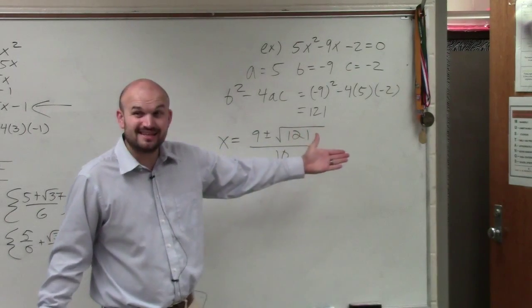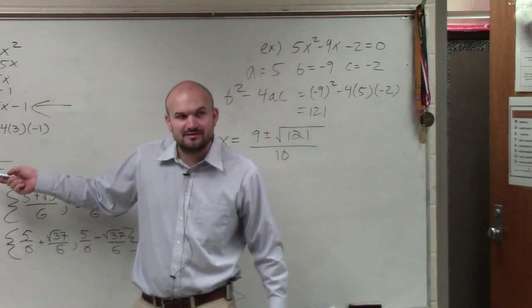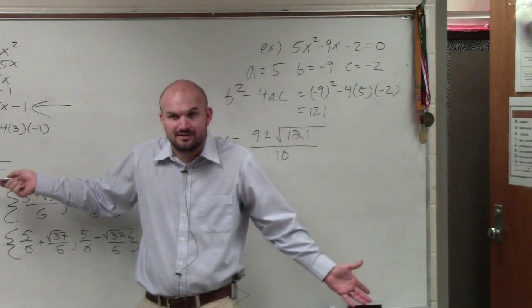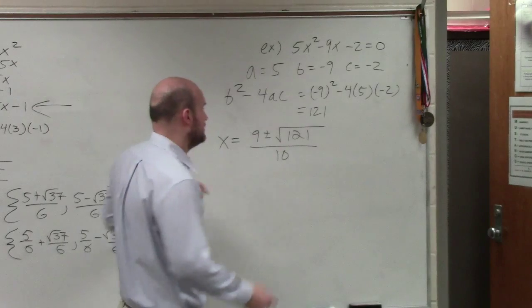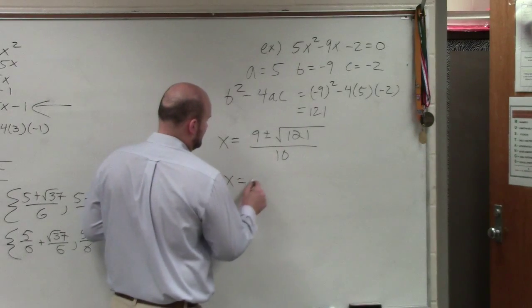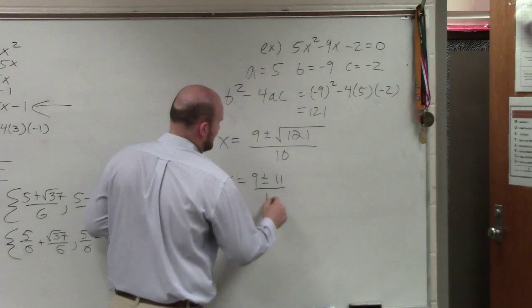Yeah, right? It's 11. We can't take the square root of 37. That's why we just had to leave it in our answer. But we can take the square root of 121. That's going to be 11. So x equals 9 plus or minus 11 divided by 10.